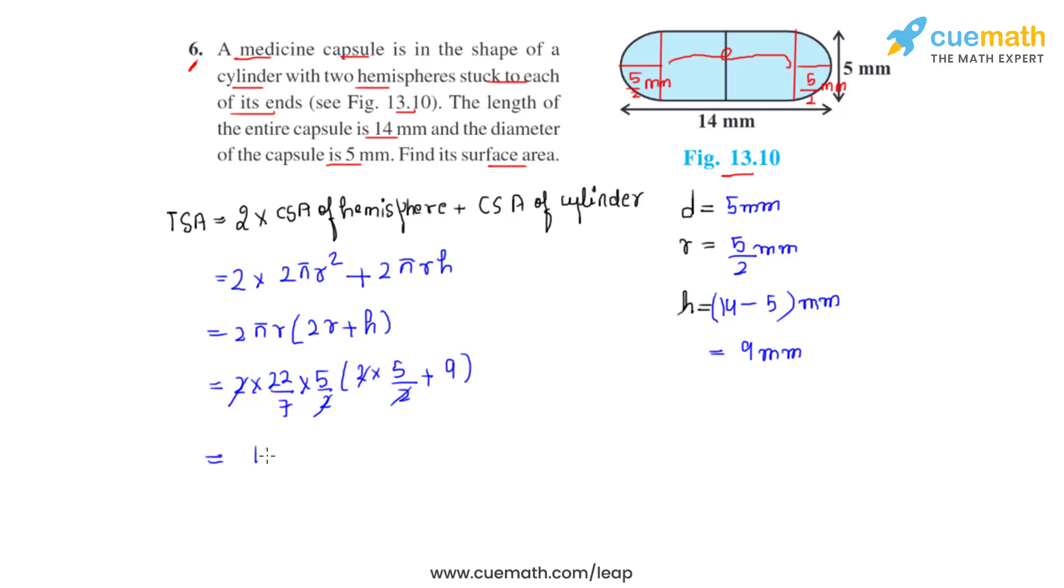So that gives us 110 divided by 7 times 5 plus 9, which is 14. So we can again cancel out 14 and 7 and we finally get the total answer as 220 millimeters squared as the total surface area of the given capsule.